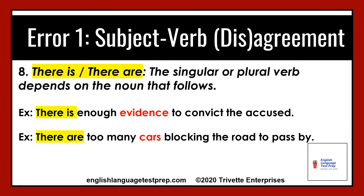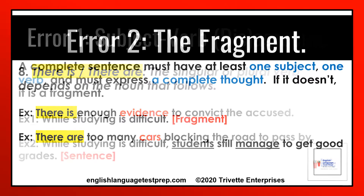Point number eight: there is / there are. The singular or plural verb depends on the noun that follows. Example one: there is enough evidence to convict the accused. Evidence is the key word — it's singular, so we need the singular verb, is. Example two: there are too many cars blocking the road. Cars is the key word — it's plural, so we need the plural form of the verb, are.